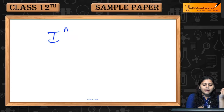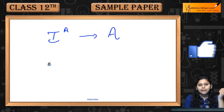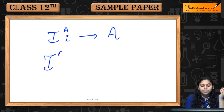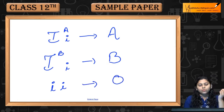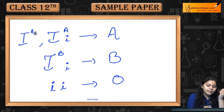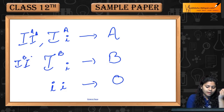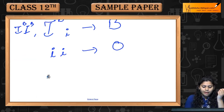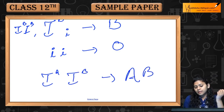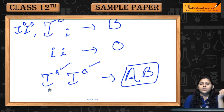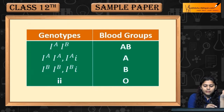अगर आपके पास IA है then blood group will be A (along with recessive i). अगर IB है then B. If ii है then O. IA IA है तो भी A, IB IB है तो भी B. And if IA and IB both are present then AB blood group होगा — A भी express करेगा और B भी express करेगा.